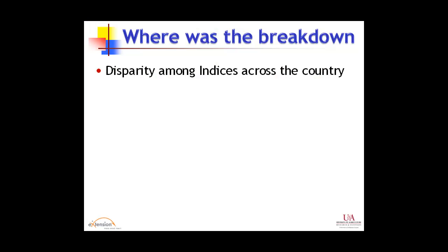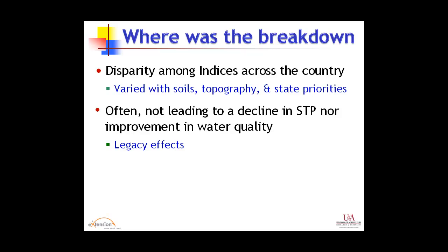So where did the breakdown occur? There was a lot of disparity across the country in indexes - they varied with soils and topography, and that's what they should have done. But we started to get criticism over the last few years that we were phosphorus researchers developing and managing our own tool - a bit like the fox at the chicken house. In the Chesapeake Bay, they weren't seeing declines in soil phosphorus, nor were they seeing, in some cases, declines in phosphorus application on soils that really shouldn't have been receiving phosphorus. The index wasn't sensitive enough to reduce that.